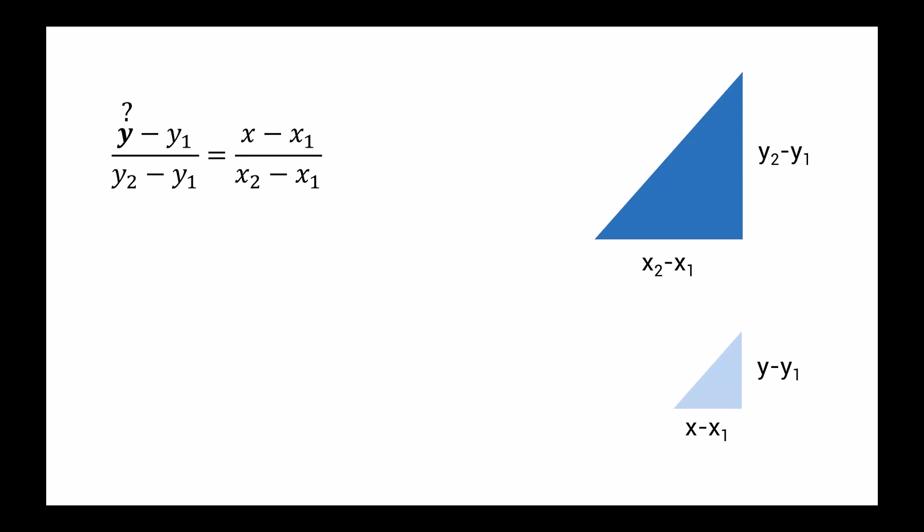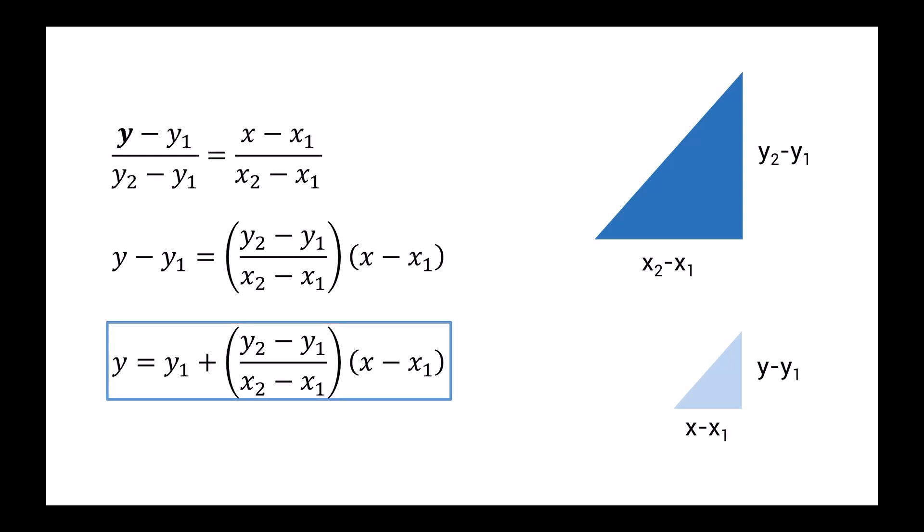Now our goal here is to solve for this unknown value of y, and we can do this through some simple algebra. So we'll rearrange our equation and we'll solve for our unknown value of y, and this results in our linear interpolation formula. So the purpose of this formula is to allow us to solve for an unknown value of y for a known value of x.